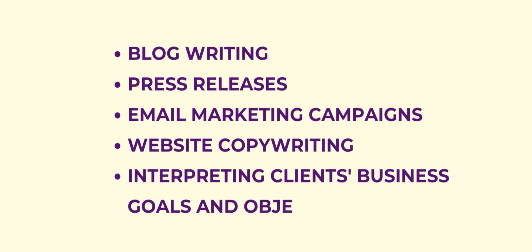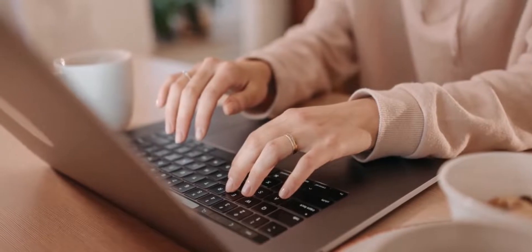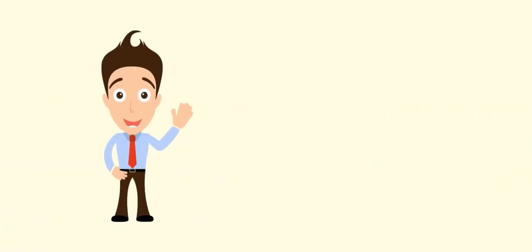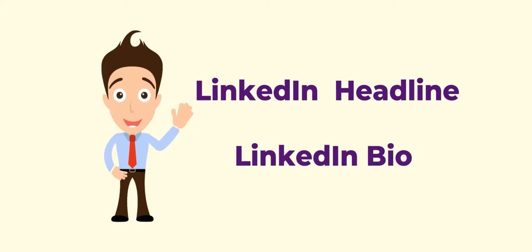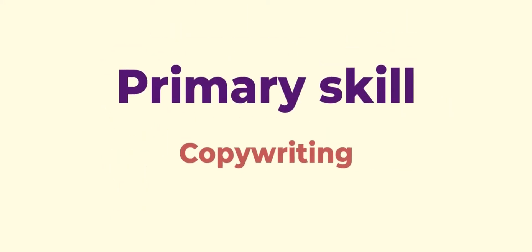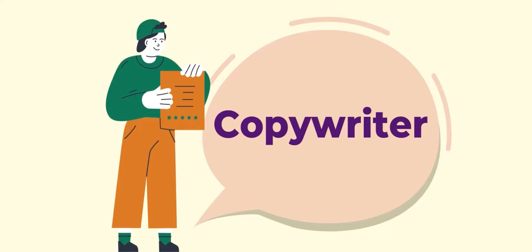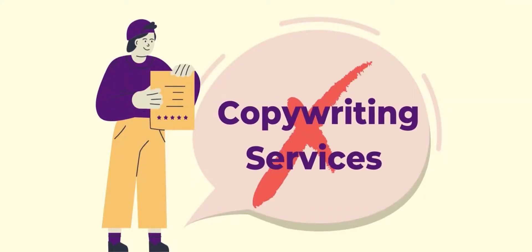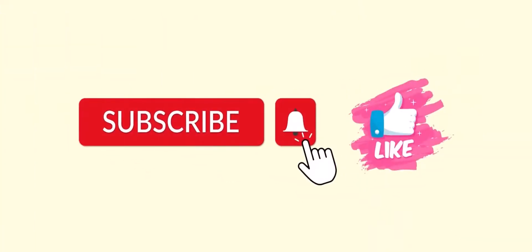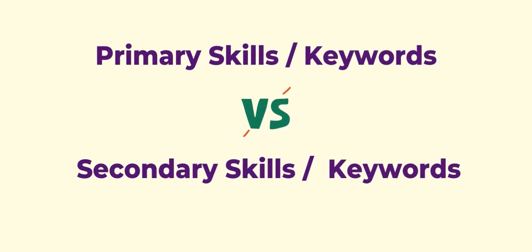Why do I want you to understand this? Because you use your primary skill to introduce yourself in the LinkedIn headline and at the start of your LinkedIn bio. Your primary skill is copywriting, so you should introduce yourself as a copywriter and include the word 'copywriter' in your headline — not 'copywriting services.' The primary skills will be your primary keywords and the relevant or secondary skills will be your secondary keywords.